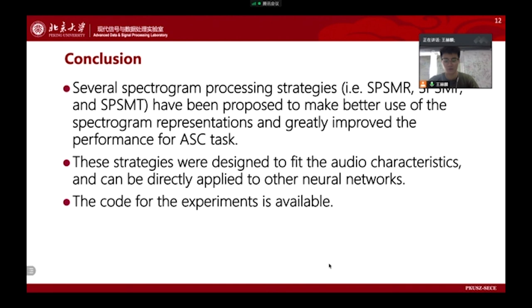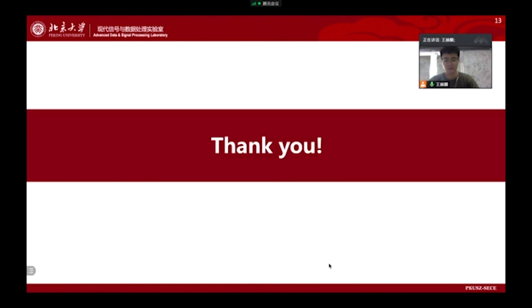In conclusion, three spectral processing strategies, that is SPSMR, SPSMF, and SPSMT, have been proposed to make better use of the spectral representations and greatly improve the performance for ASC tasks. These strategies were designed to fit the audio characteristics and can be directly applied to other neural networks. The code for the experiments is available. So that's all. Thank you.